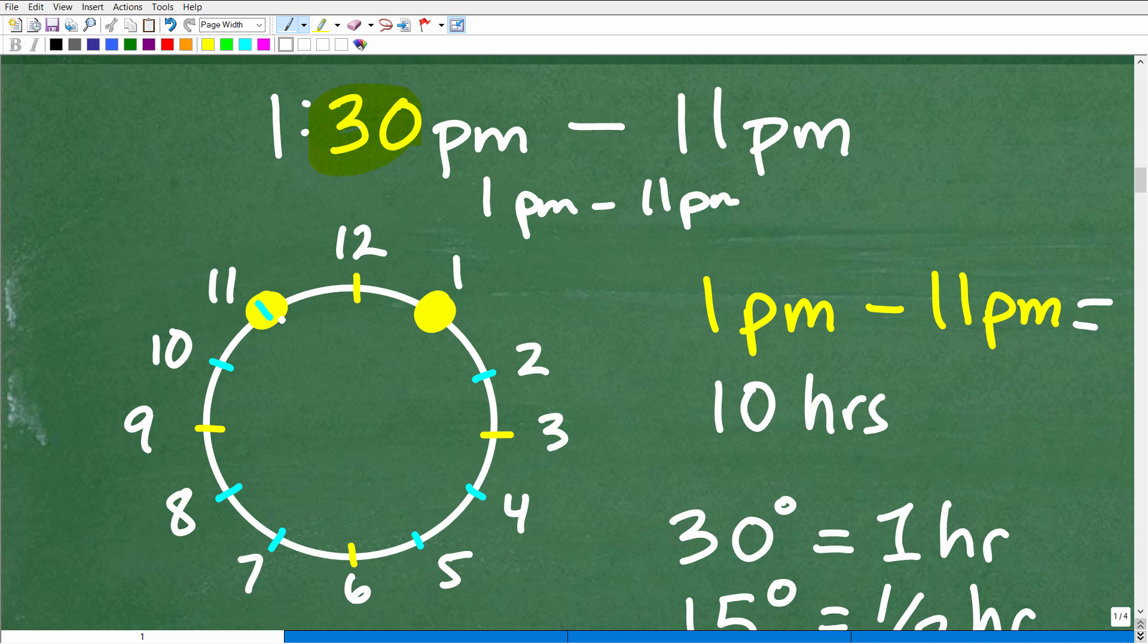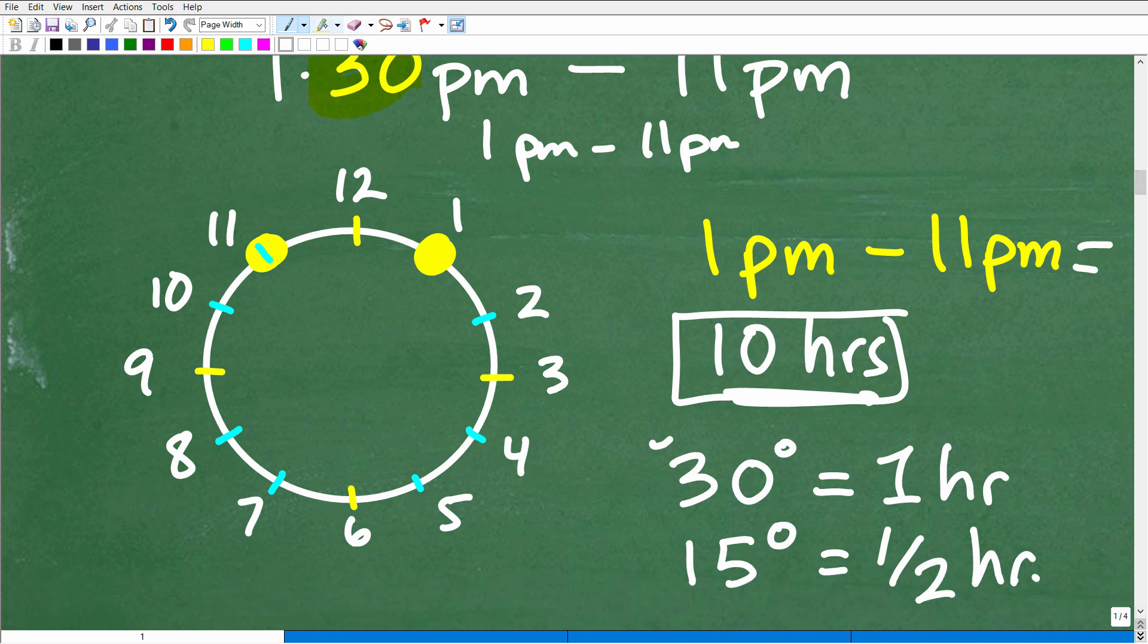How many degrees is that? Well, here's 1 and here's 11. So, how many hours is that? Okay, well, that's 10 hours. But you can just kind of see here we have 2 hours between 11 and 1. We have 12 hours total. So, again, pretty obvious, hopefully, to you that there are 10 hours between 1 PM and 11 PM.